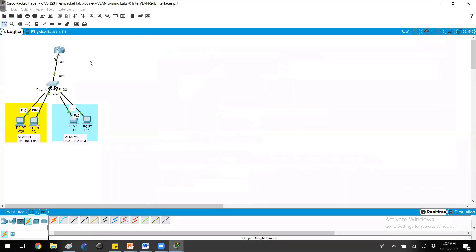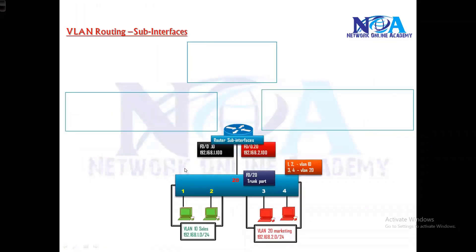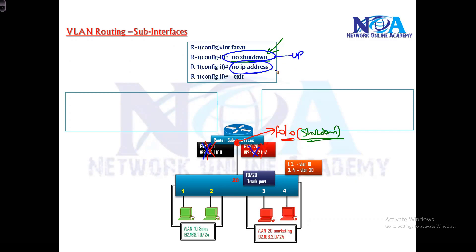Once we configure the trunk, the next step is to go to the router and create sub-interfaces. Sub-interface configuration: first step, go to the physical interface. The sub-interfaces are on the actual physical interface I'm connecting, which is F0/0. Make sure that interface is in no-shutdown state, because if the physical interface is in shutdown state, automatically whatever sub-interfaces we create will also be in shutdown state. If the physical interface is down, the logical interfaces created on it will also be down.